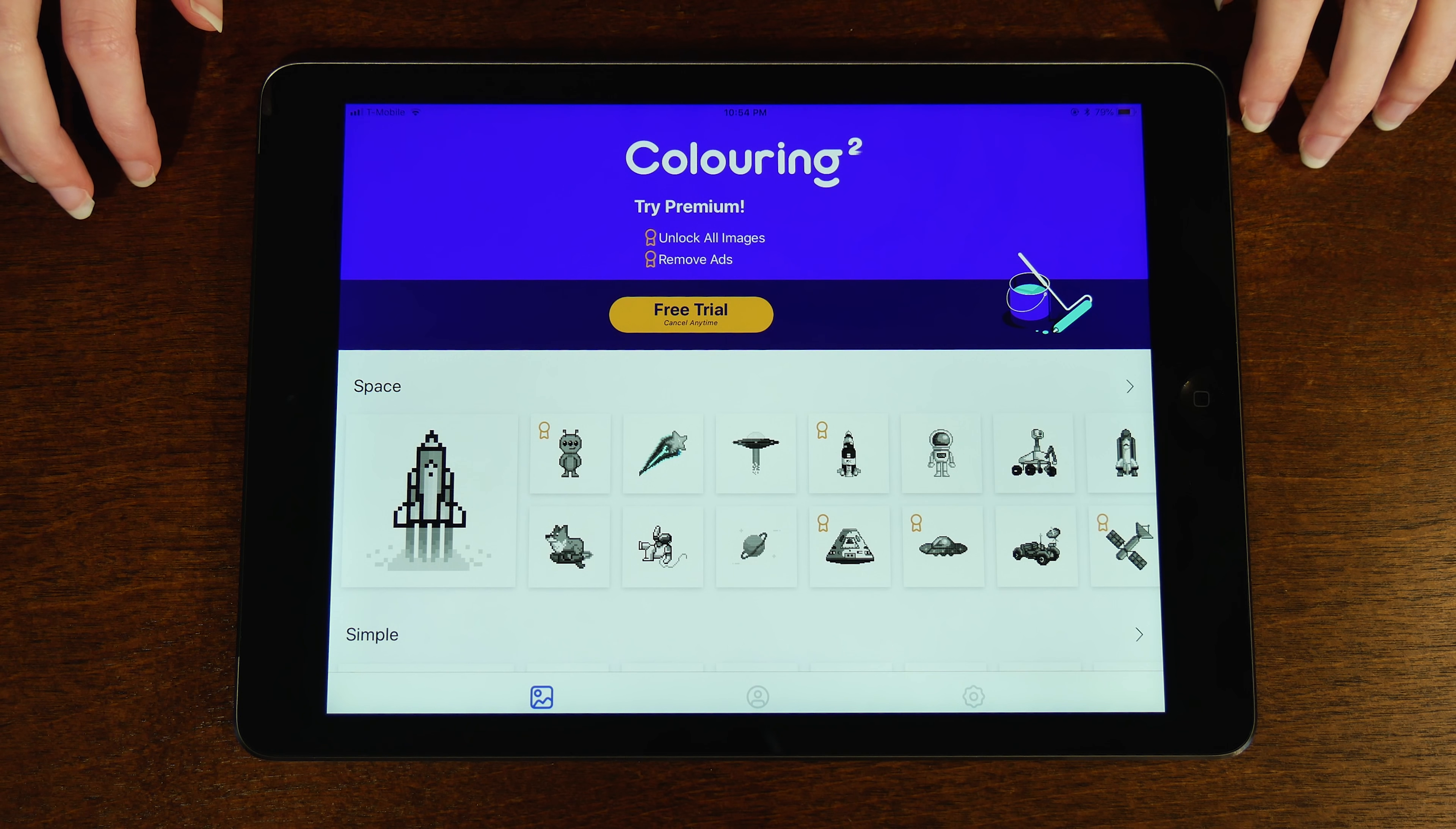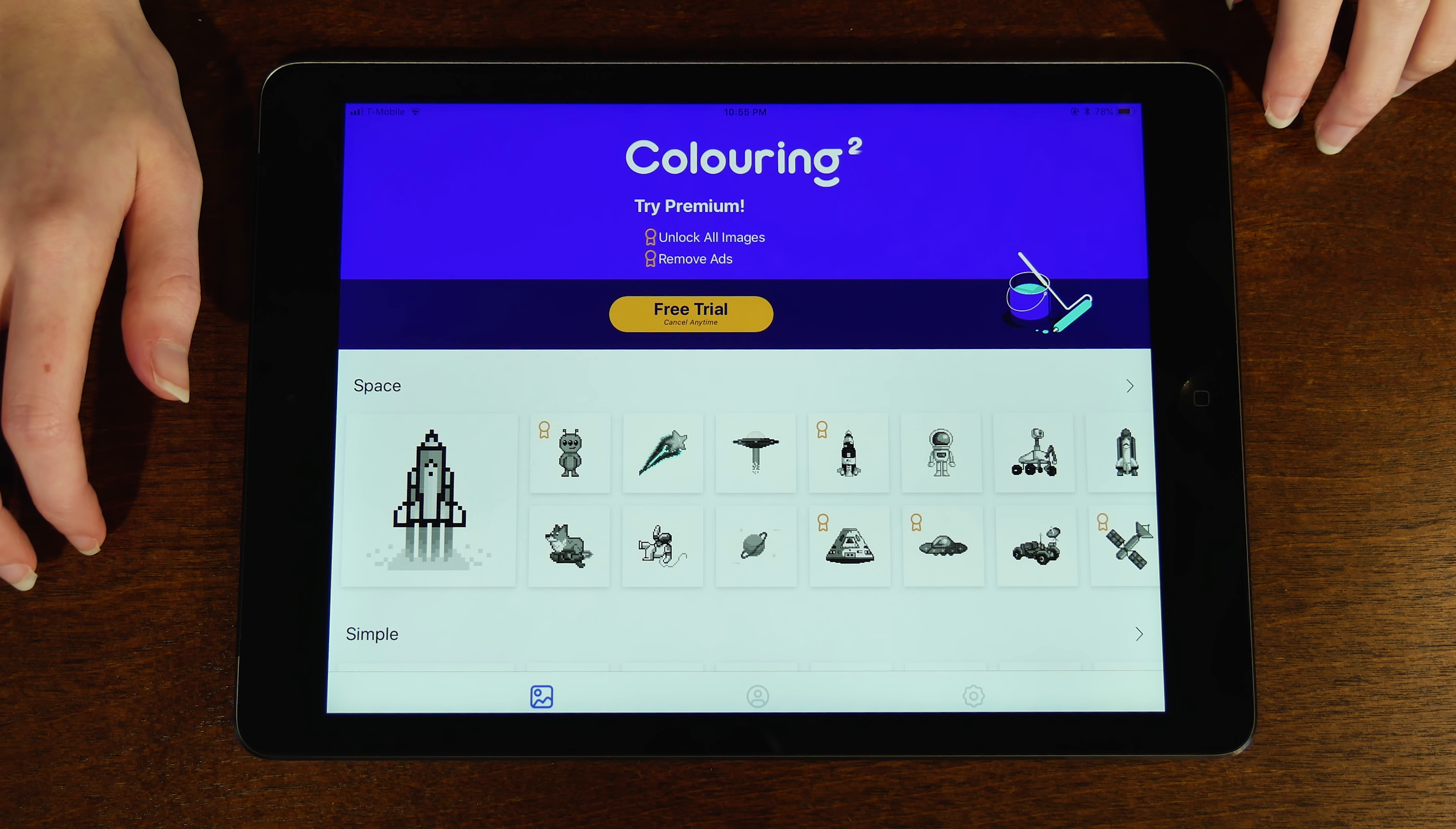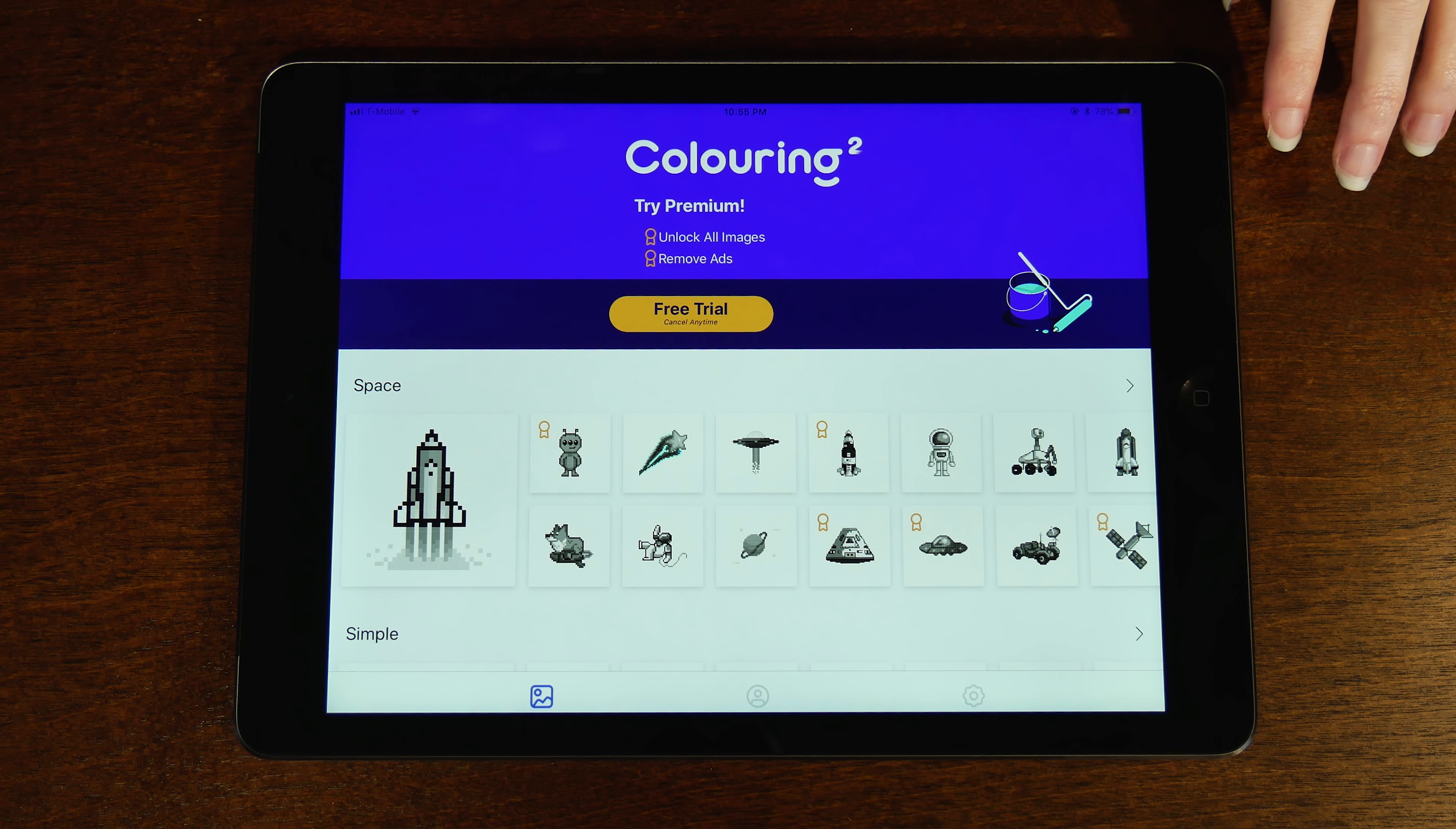In this video today, I will be going through some of the pictures from this app, and I will be coloring them in. As I do so, I will be softly tapping on the surface around the iPad. This app is called Coloring 2, and it can be found on the Apple store for the iPhone and the iPad.